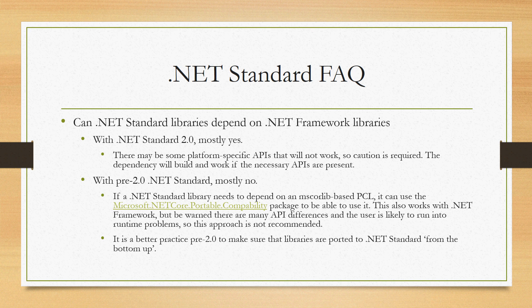Before .NET Standard 2.0, no, this doesn't work because the .NET Standard surface area is much smaller than .NET Framework's. We do have a compatibility package meant to be used with PCLs that are MS-Core lib-based. You can jury-rig it to get .NET Standard libraries to build referencing .NET Framework libraries if they include the Microsoft.NETCore.Portable.Compatibility package, but there are a lot of API differences and a user is likely to run into problems at runtime, so it's not recommended. A better practice on pre-2.0 .NET Standard is to make sure all the code you own is ported from the bottom up — lower-level libraries first, then the ones that depend on them.